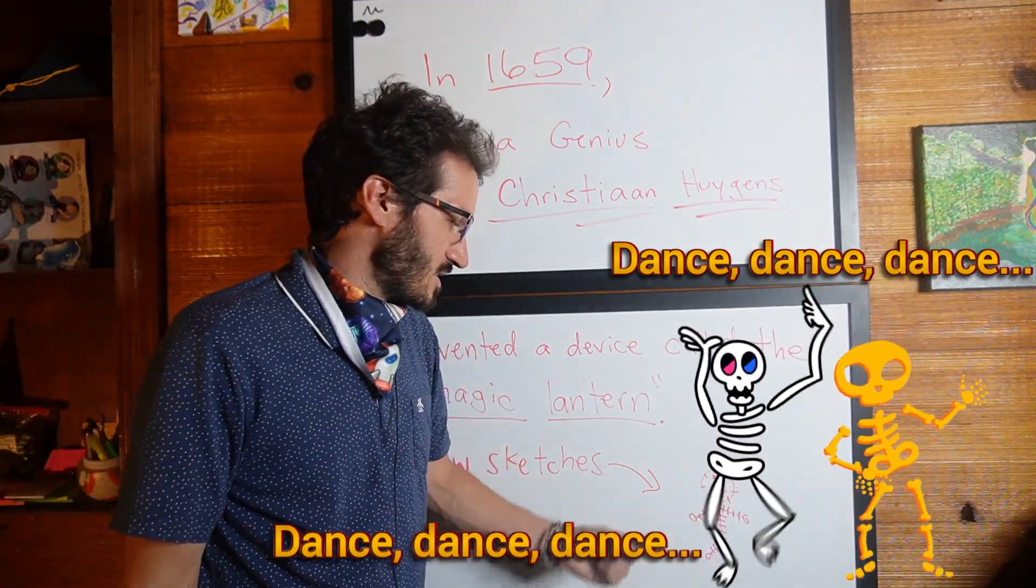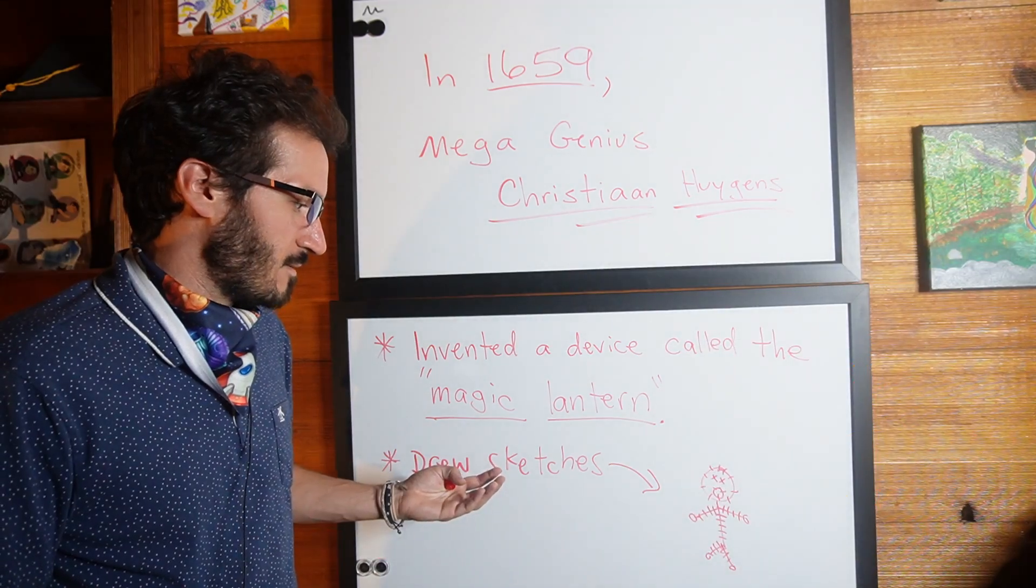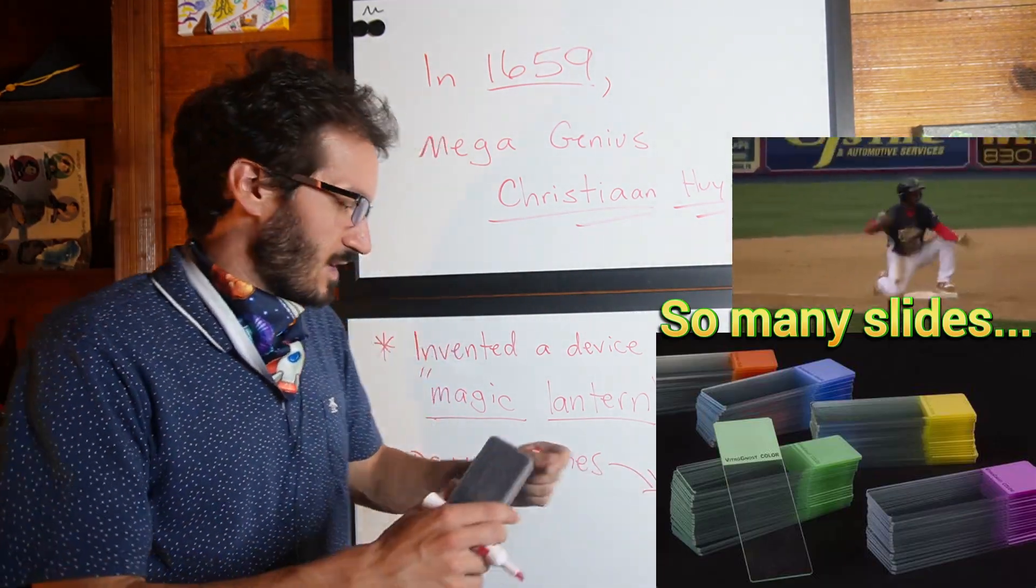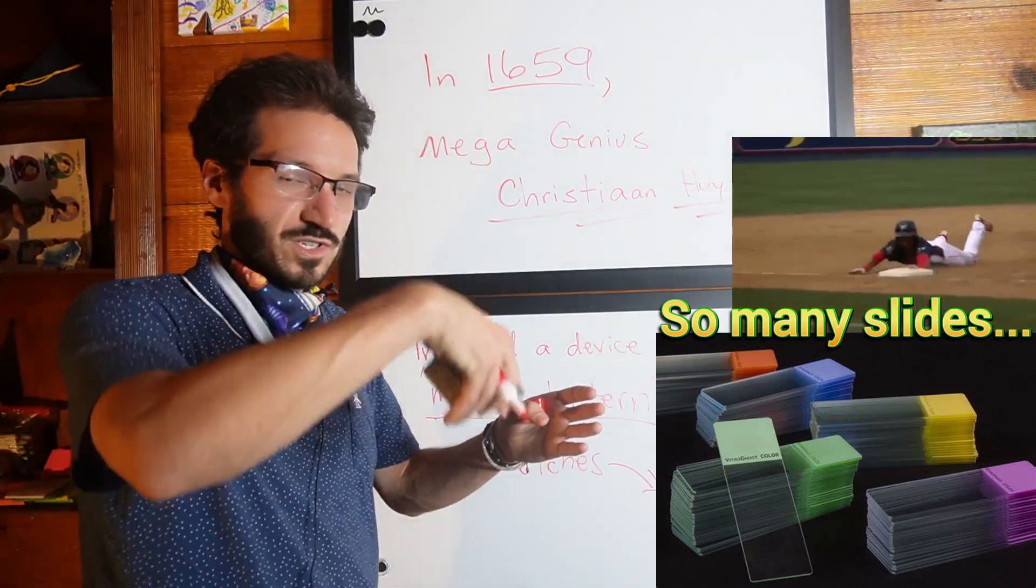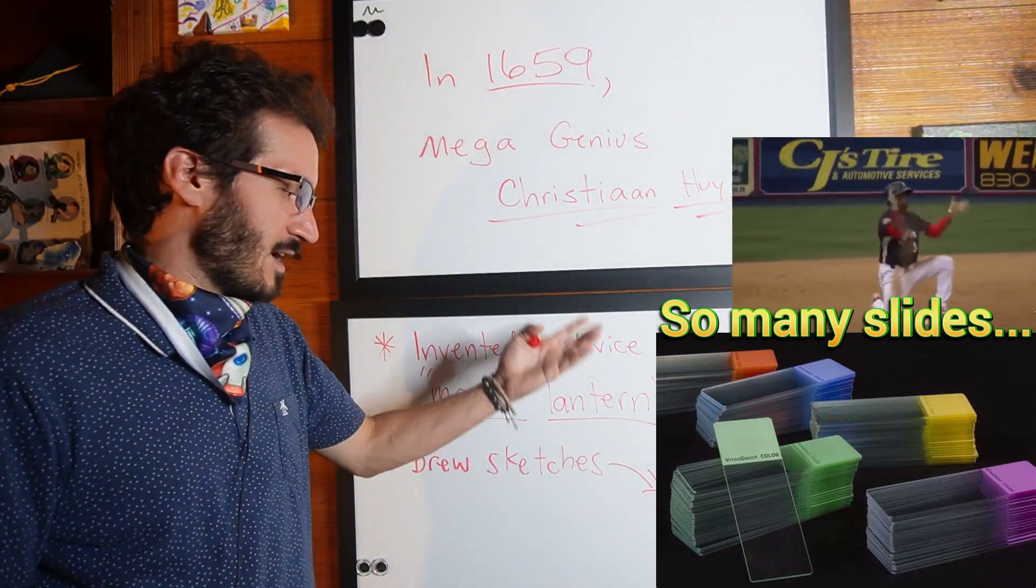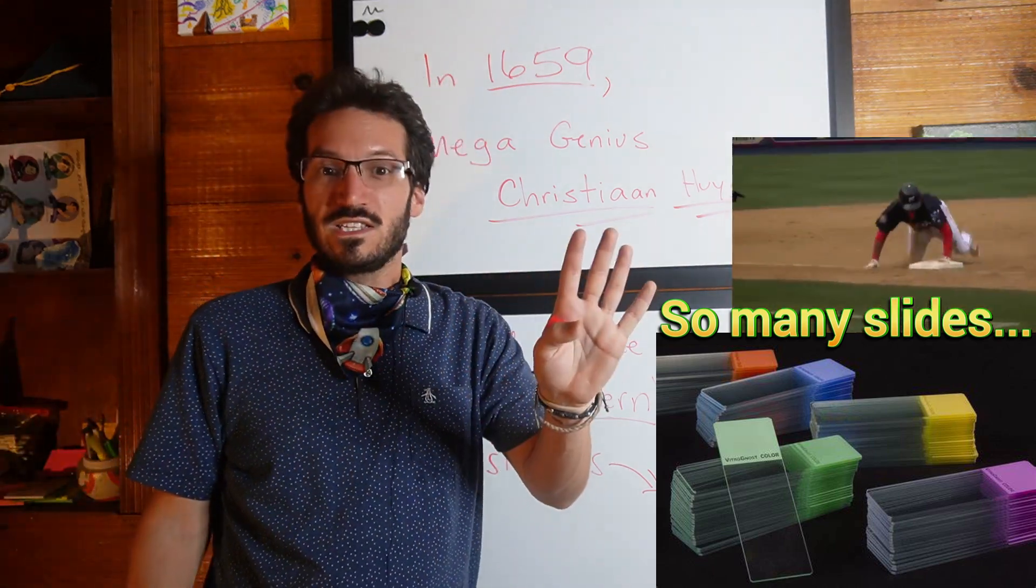That was his first initial sketch on this Magic Lantern thing he had. It's funny, when he made this invention and got this image to move, he would just change out the slides and it created this very slow moving image. Back in the day it moved super super slow, not like today.